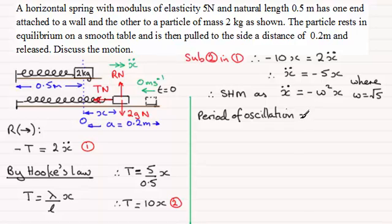That's given by 2 pi divided by omega. So in this example, that period of oscillation is going to be 2 pi divided by root 5. And that'll be measured in seconds.